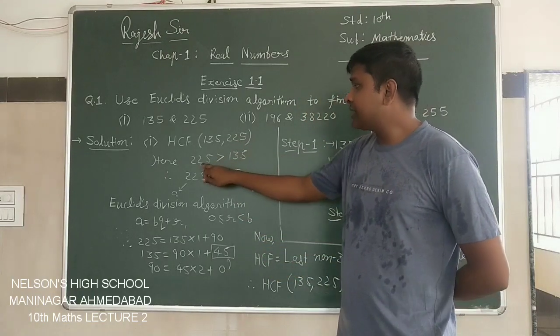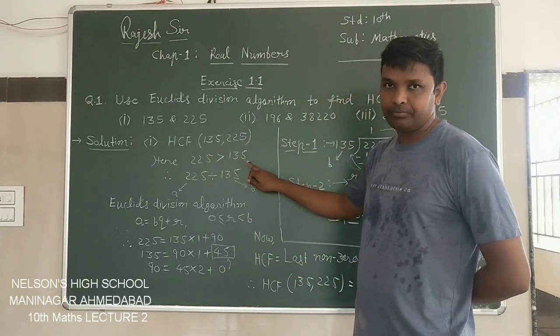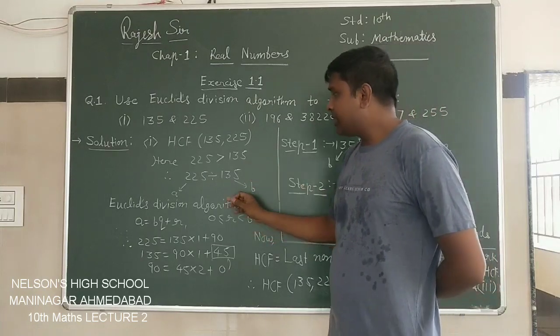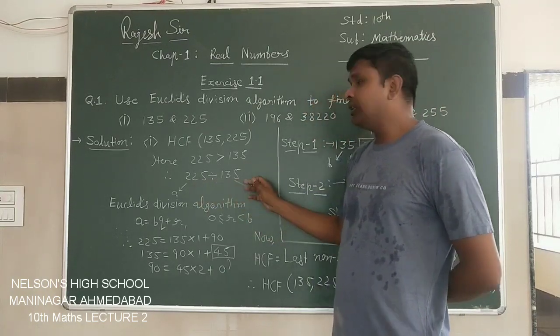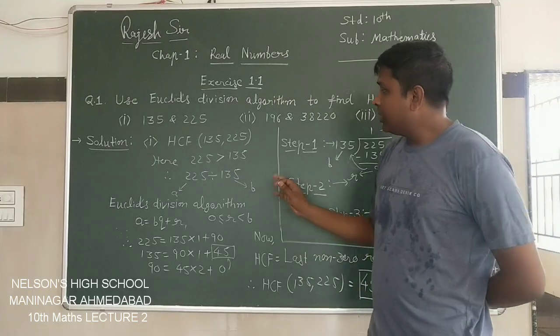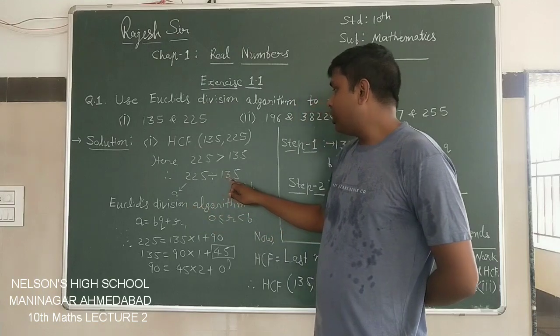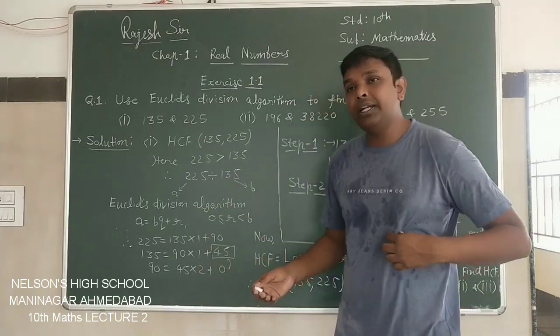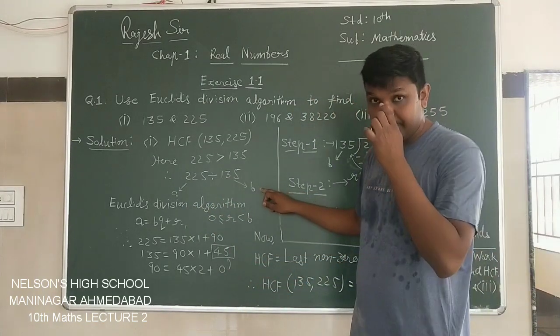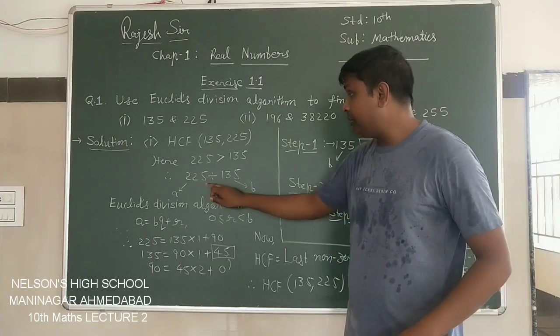Here you can see 225 is greater than 135, so it is obvious that 225 will be divided by 135. The greater number we have to denote as A and the smaller number by which we are going to divide is denoted as B. We have to decide A and B this way.